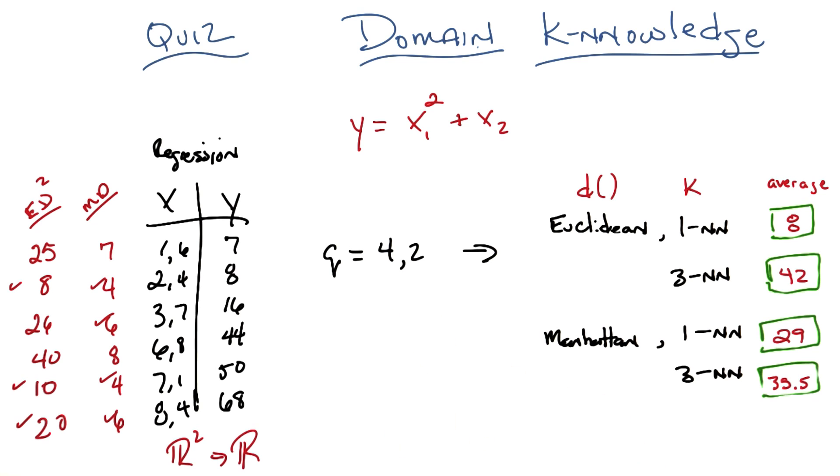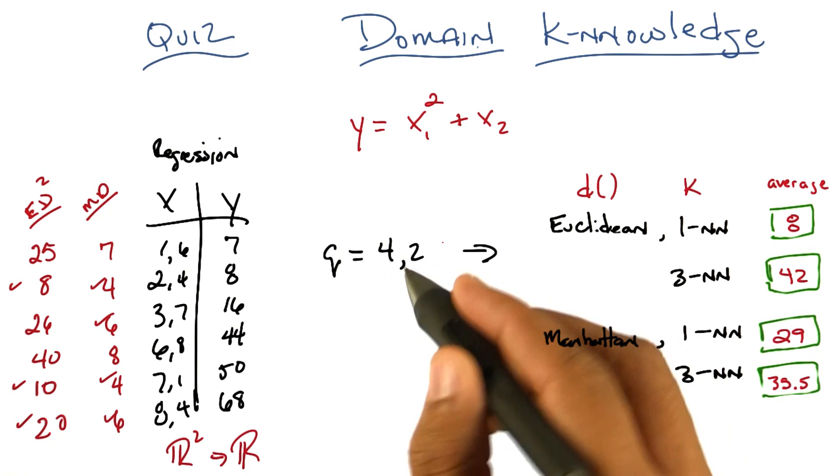So what would be the actual answer for 4 comma 2? Okay, so 4 squared is 16 plus 2 is 18, which is close to none of them. Right.